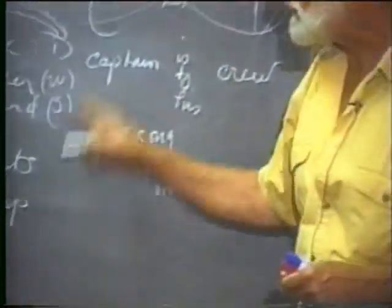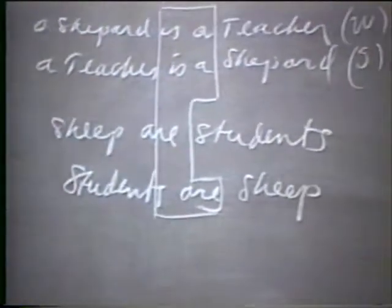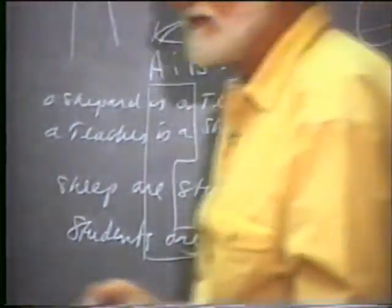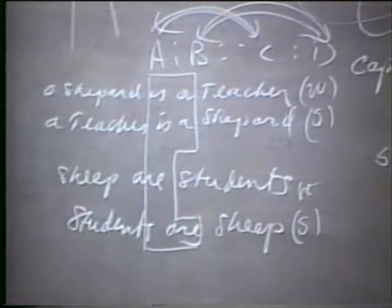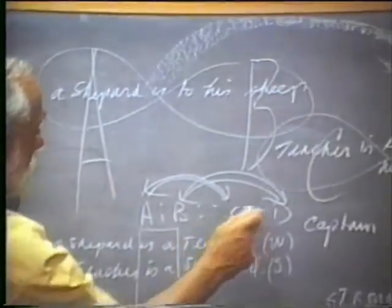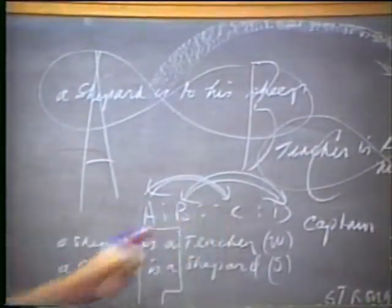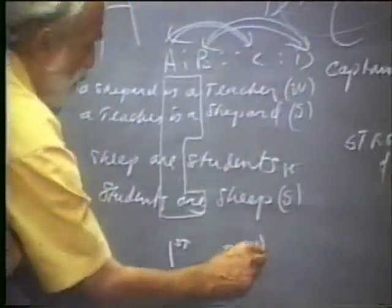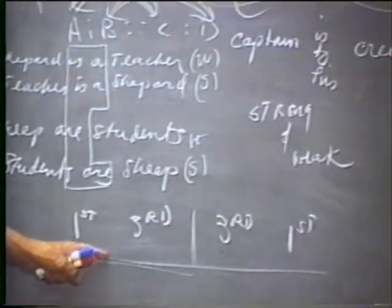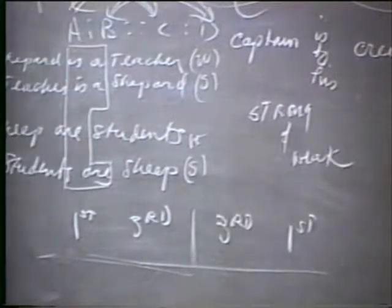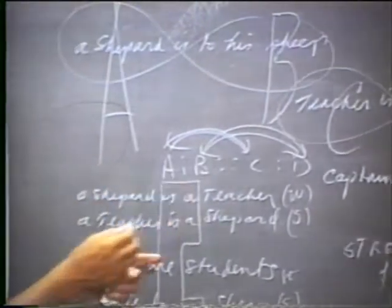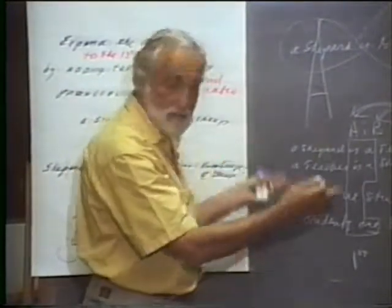Take this one: sheep are students or students are sheep — which is stronger? Students are sheep. And the weaker is sheep are students. What do you notice? It's always the inverse — going backwards is always the stronger. Always. If you set up your terms properly, it's always the stronger. This is an invariable property of an archetypal analogy.